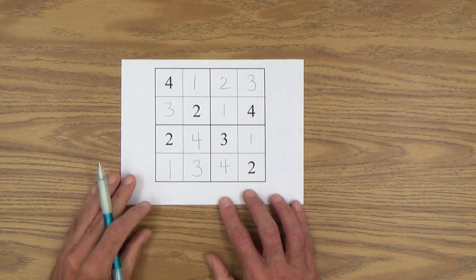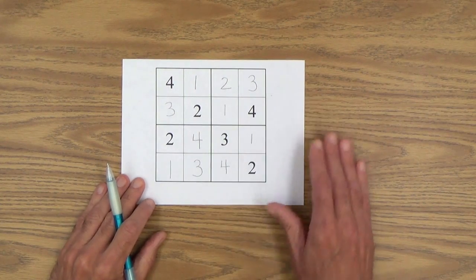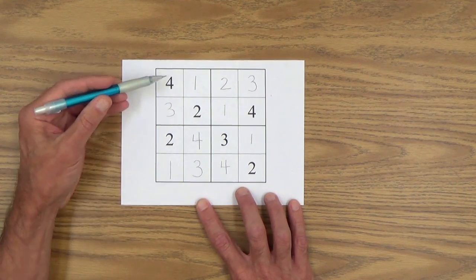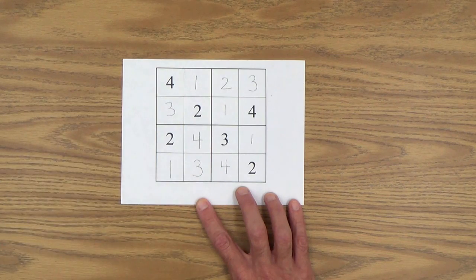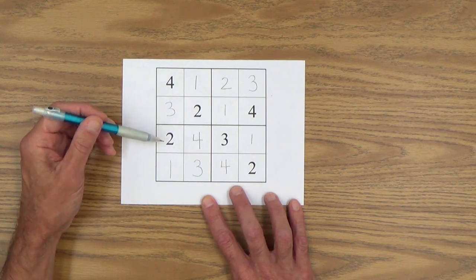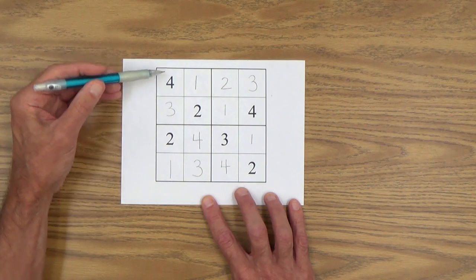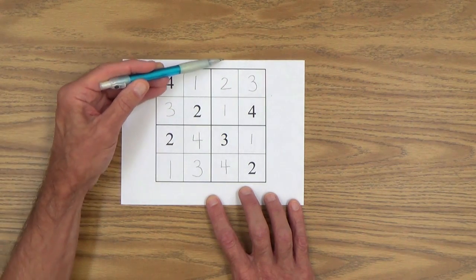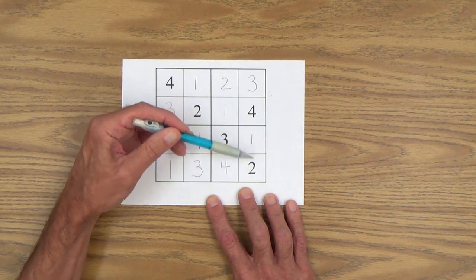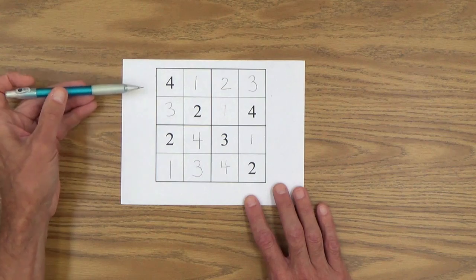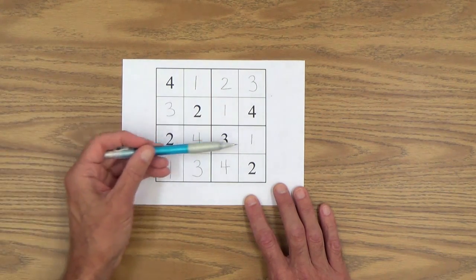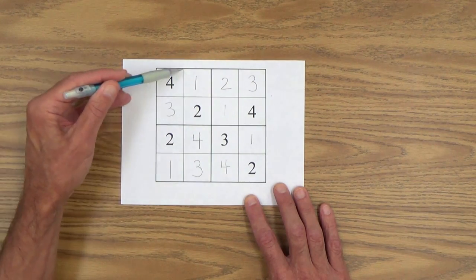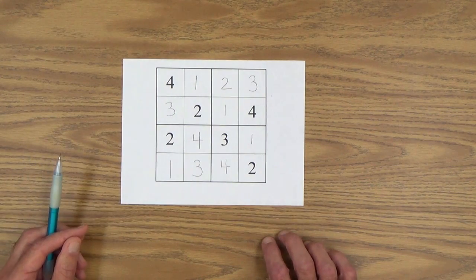And one thing you need to do once you complete the puzzle, solve the puzzle, so to speak, is, and you should teach your child how to do this because it's very important, is to check to make sure you in fact solved it correctly. And here's how you can do it. You go column by column, row by row, and box by box to ensure that you in fact have all of the numbers in each of those. So column one: one, two, three, four. Column two: one, two, three, four. Column three: one, two, three, four. Column four: one, two, three, four. And of course, you can do the same thing with rows. Make sure all four numbers are there and no repeats. And then lastly, look at the boxes and make sure that all four numbers are there and no repeats.